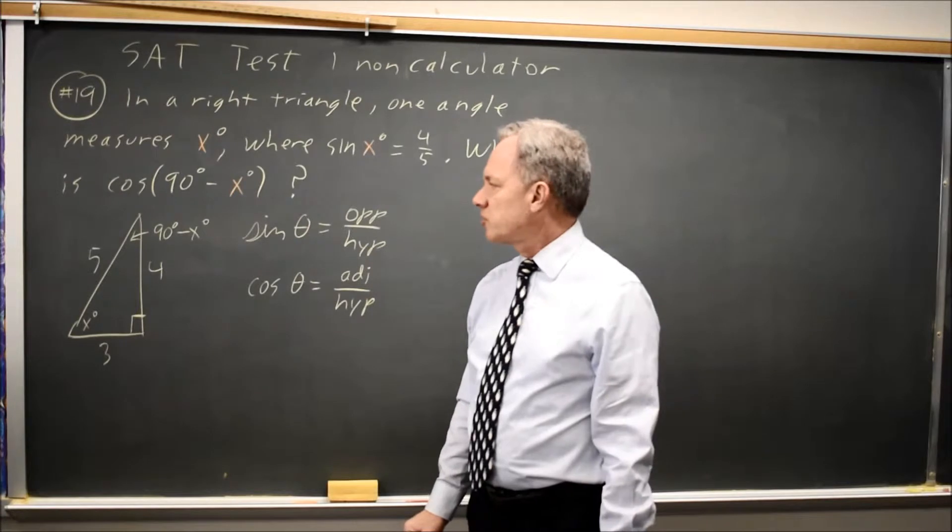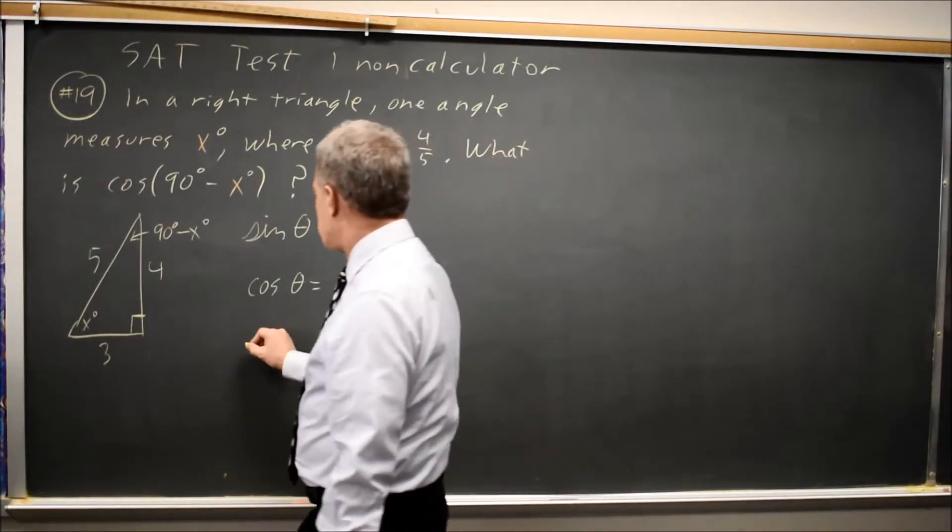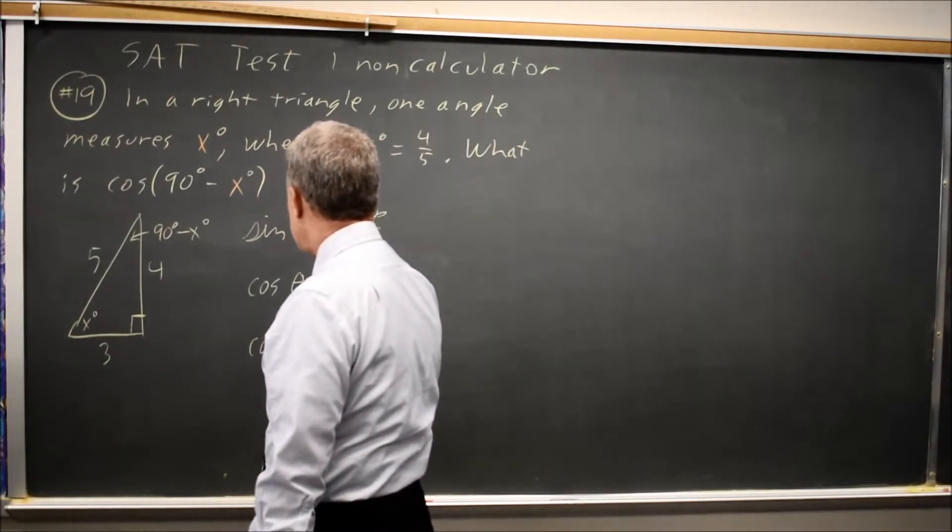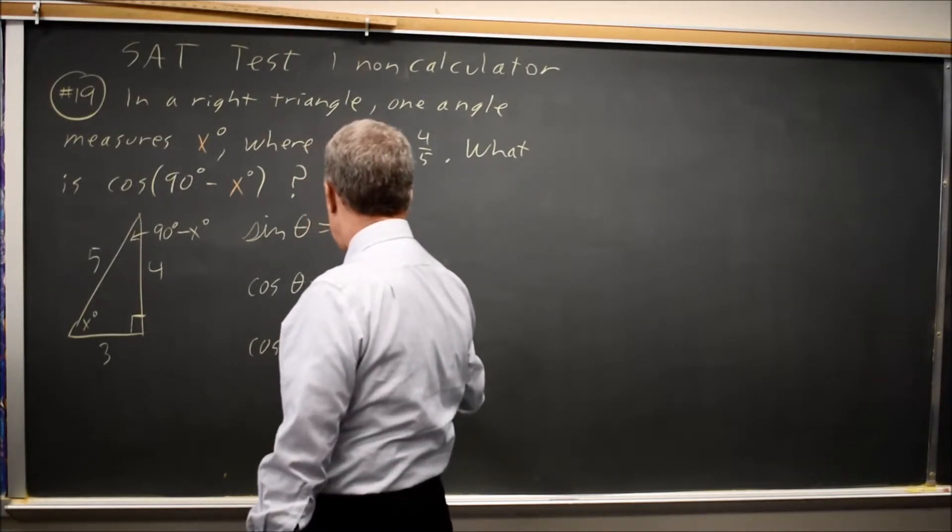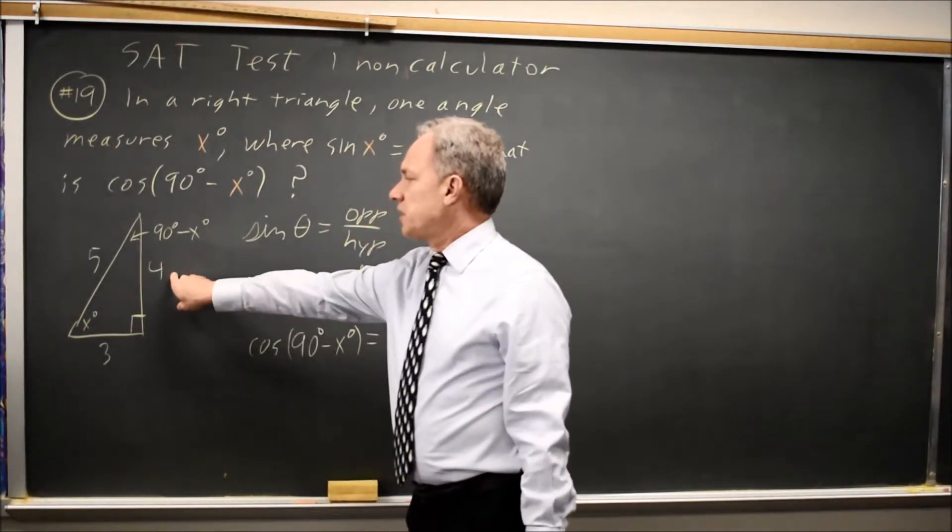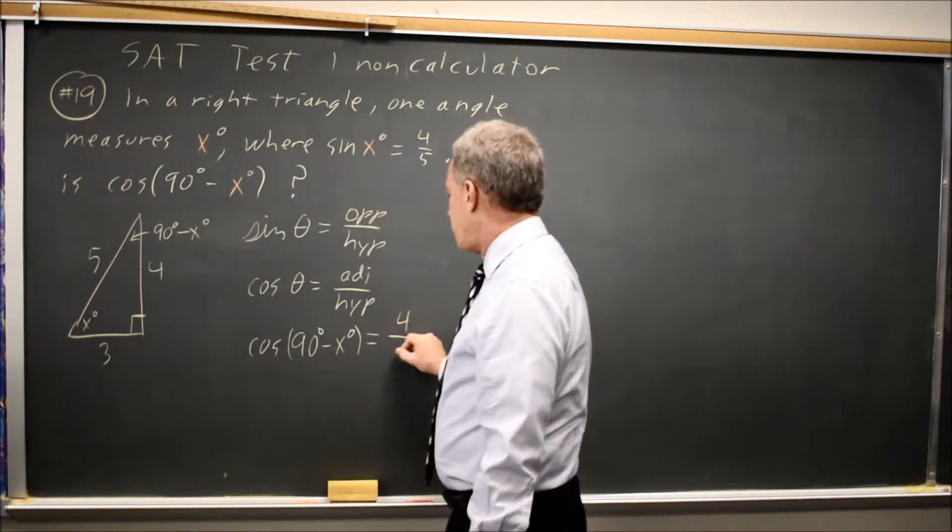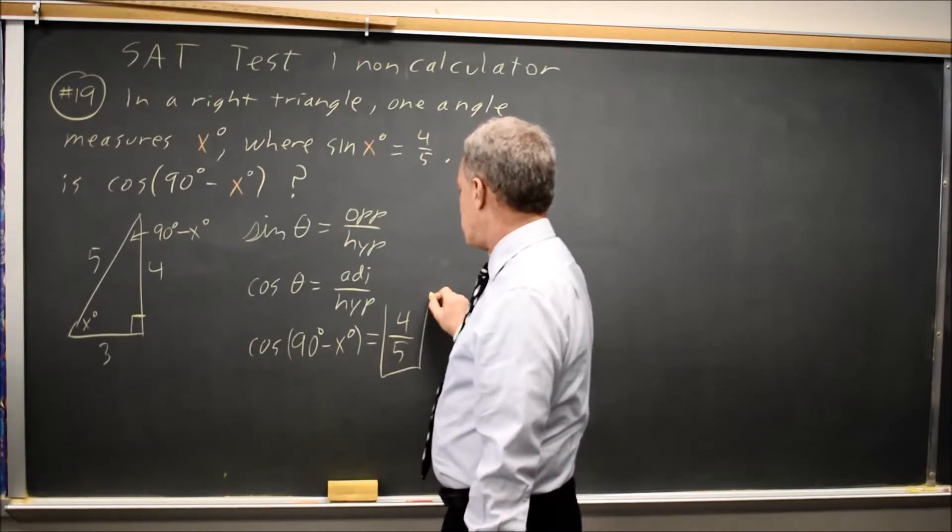In this case, the cosine of (90 - x) degrees is the adjacent side. The side adjacent to that is 4 over the hypotenuse, which is 5. And that's what they're asking for.